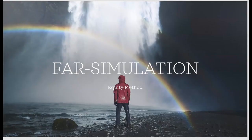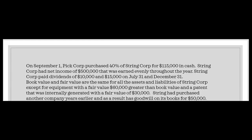Here's a FAR SIM on the equity method. If you get a tough equity method SIM, it's just like this — they'll give you a bunch of facts. On September 1st, Piccorp purchased 40% of Stringcorp for $115,000 in cash. Stringcorp had net income of $500,000 earned evenly throughout the year. Stringcorp paid dividends of $10,000 on July 31st and $15,000 on December 31st. The timing matters because Piccorp was only a stockholder from September 1st on, so Piccorp does not get any of the $10,000 July dividend, but does get its share of the $15,000 December dividend.